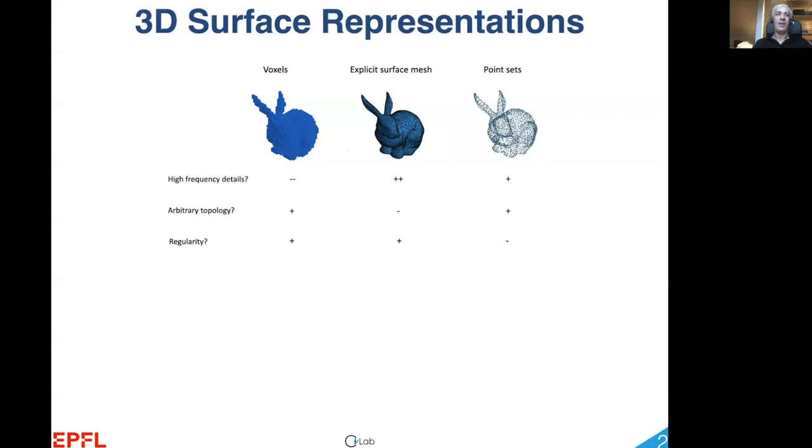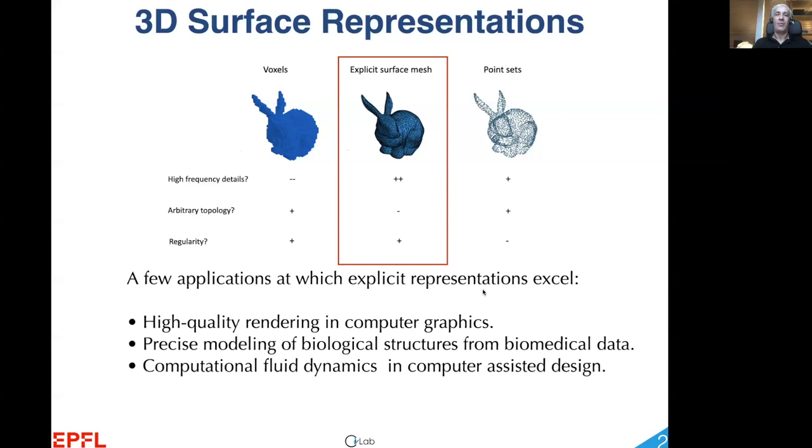This is definitely the case in computer graphics when accurate renderings are required. This is also true in biomedical imaging when we need to compute the surface areas of specific structures, or in computational fluid dynamics when we want to represent boundary conditions.